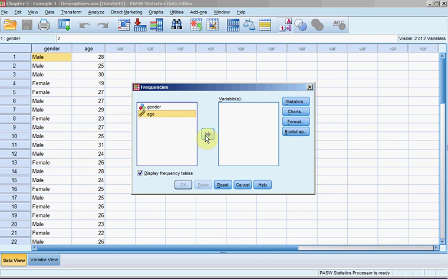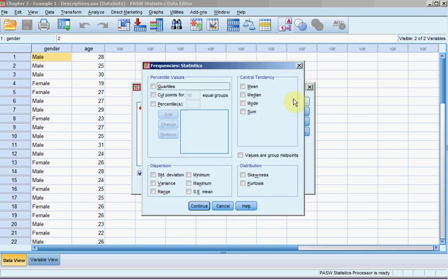And we'll start with age. We'll click on this arrow key, which moves age into the variable window. For Statistics, under Central Tendency, we'll select Mean, Median, Mode. And under Dispersion, we'll select Standard Deviation, Variance, Range, Minimum, Maximum. And click Continue.